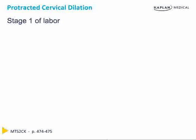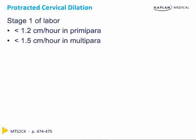Protracted cervical dilation occurs in stage 1 of labor during the active phase, greater than about 4 cm. It is diagnosed when there is less than 1.2 cm per hour in a primiparous patient, or less than 1.5 cm per hour in a multiparous patient.